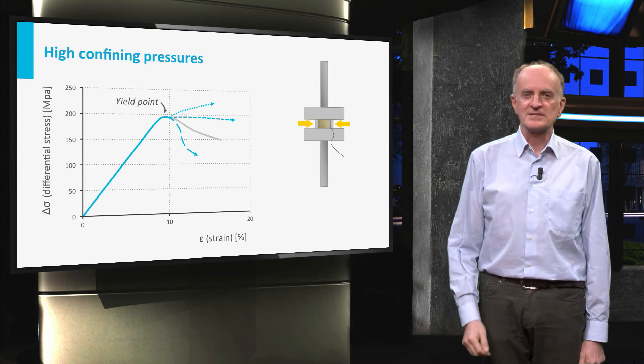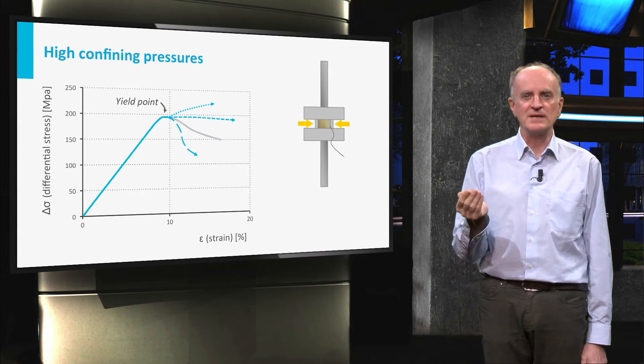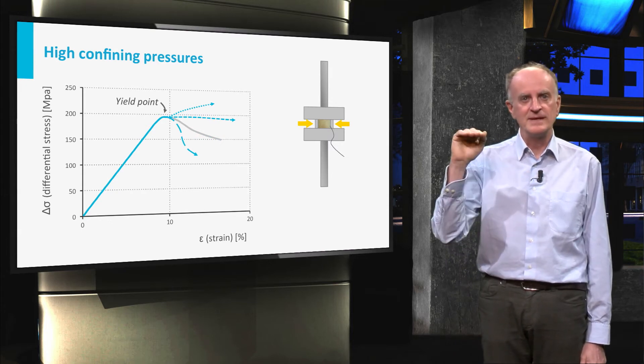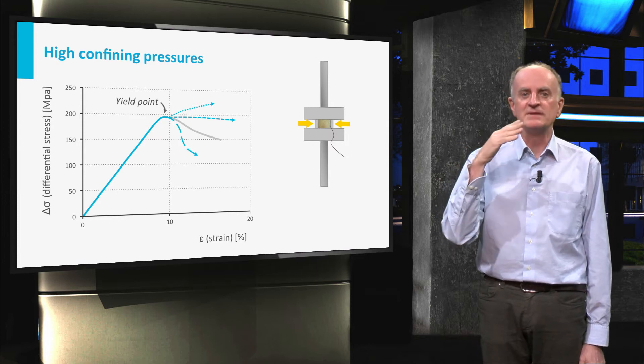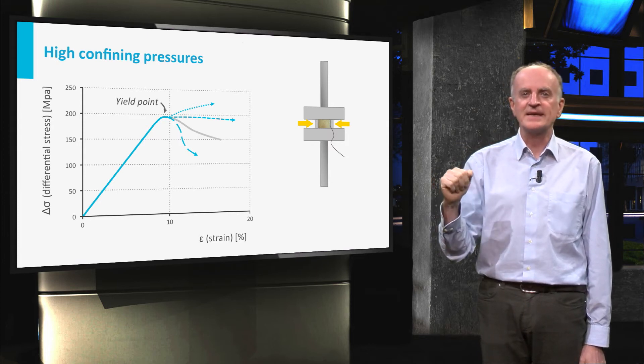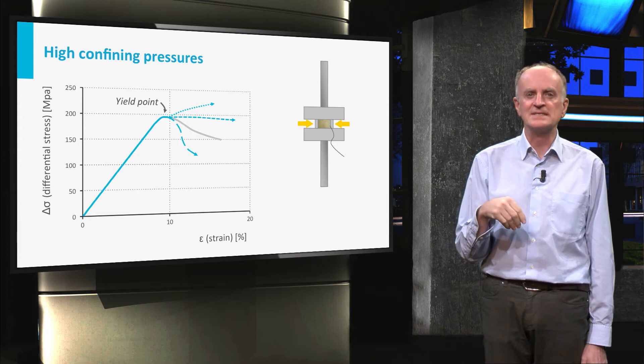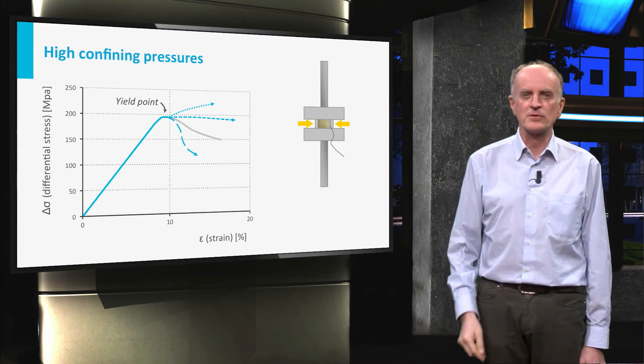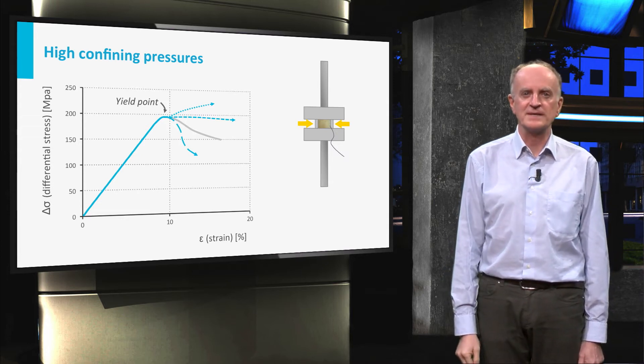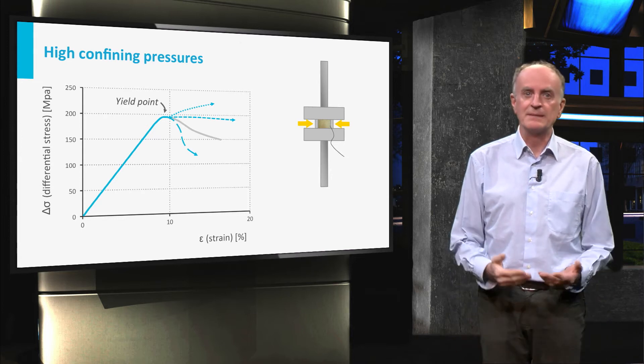After the yield point, the stress strain can have different shapes. It can keep on climbing, it can flatten or it can even descend. The latter case implies that less stress is needed to keep on deforming the sample at the same strain rate. The sample has become softer.